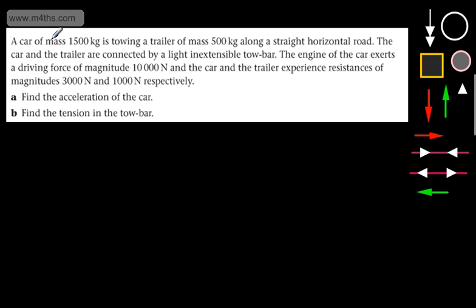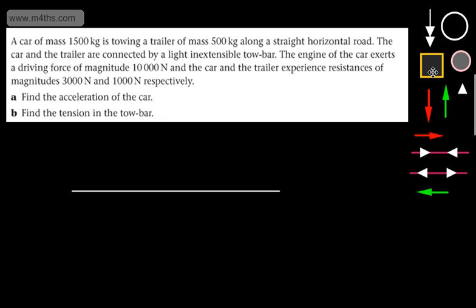A car of mass 1,500 kilograms is towing a trailer of mass 500 kilograms along a straight horizontal road. The car and the trailer are connected by a light inextensible tow bar — light inextensible means equal acceleration and equal tension. The engine exerts a driving force of 10,000 newtons and the car and trailer experience resistances of 3,000 newtons and 1,000 newtons respectively. Find the acceleration and the tension.